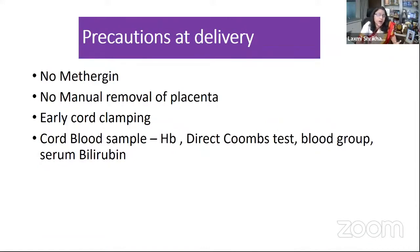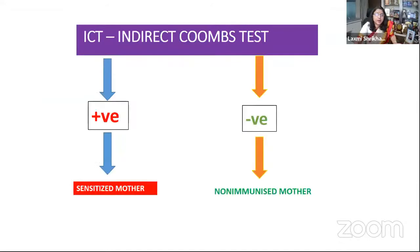At delivery, take certain precautions: don't give Methergin, try to avoid manual removal of placenta, do early cord clamping, and collect cord blood sample for hemoglobin, direct Coombs test, blood group, and serum bilirubin. This is the management when indirect Coombs test is negative and the mother is non-immunized.